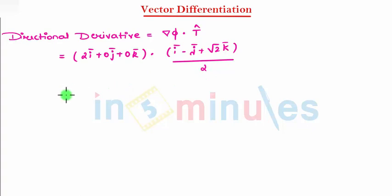I get value here. This will be nothing but only 2, and this divided by 2. So my directional derivative is 1. Thank you for watching video on in 5 minutes.